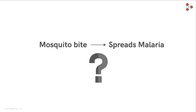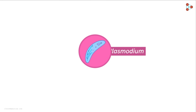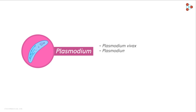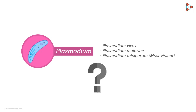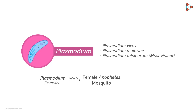The actual causative agent of malaria is the protozoan called Plasmodium. Plasmodium vivax, Plasmodium malariae, and Plasmodium falciparum are a few species of Plasmodium that cause malaria in humans. Among these, Plasmodium falciparum is the most virulent and can also be life-threatening. The protozoan Plasmodium lives as a parasite in the female Anopheles mosquito, and from there it gets transmitted to humans with a mosquito bite. Hence, it is the infected mosquito bite which can cause malaria, and not the insect itself.